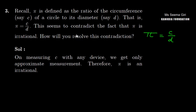So this is an irrational number, but how do you resolve this? When measuring C with a device, we get only an approximate measurement. Therefore, pi is an irrational number.